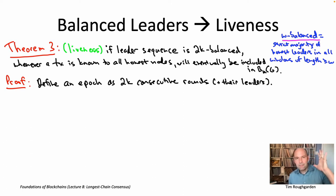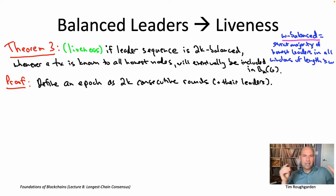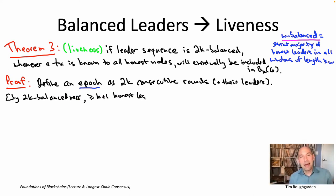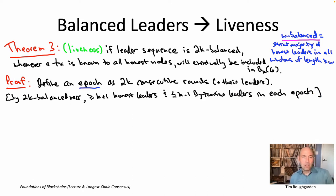Let's go back to the beginning of time — round zero, where there's the genesis block, and then leaders keep getting selected each round. Think about breaking up all the rounds that ever happened into what I'll call epics of 2K consecutive rounds. The first 2K rounds is one epic, the next 2K rounds is the second epic, and so on. An epic is just long enough that the 2K balance condition gives us something. In each epic, a strict majority of those 2K leaders must be honest — at least K+1 honest nodes and at most K−1 Byzantine leaders in a given epic.